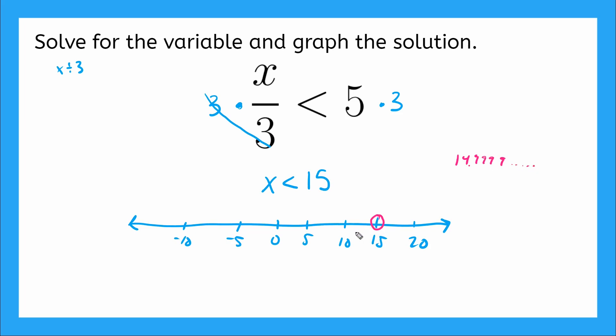All those 9s keep going on forever, right? But it never gets all the way to 15. And then my solution set is all the numbers that are less than 15. So my arrow will point towards the left, including all of the numbers that are smaller than 15. Cool.